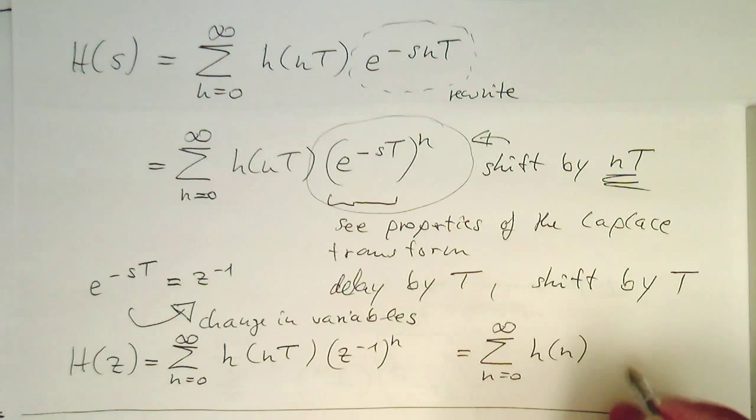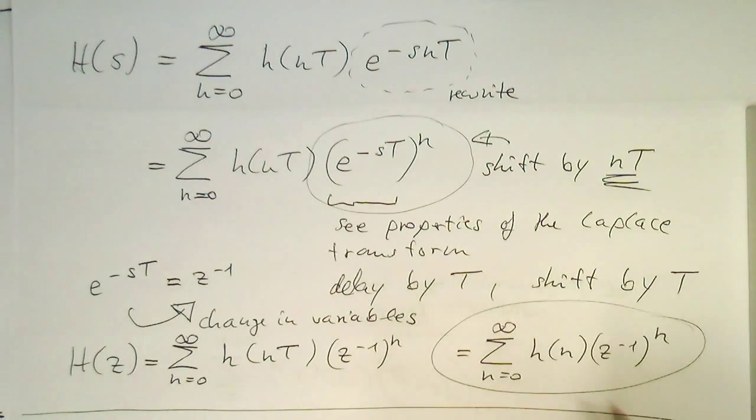z^(-1) to n. And this one is called the so-called z-transform.